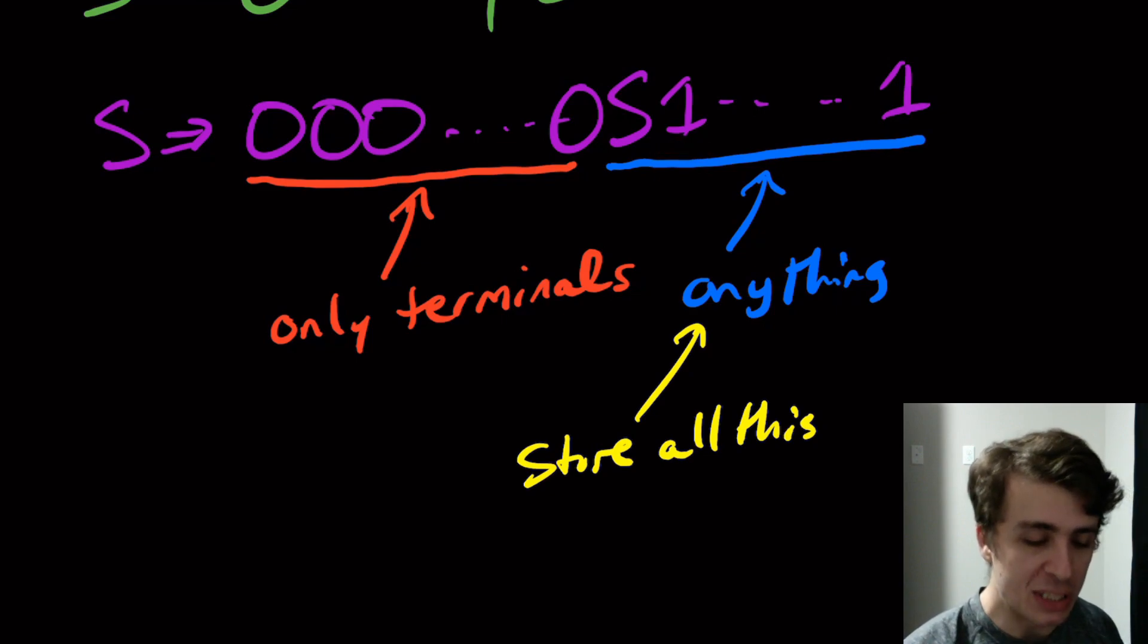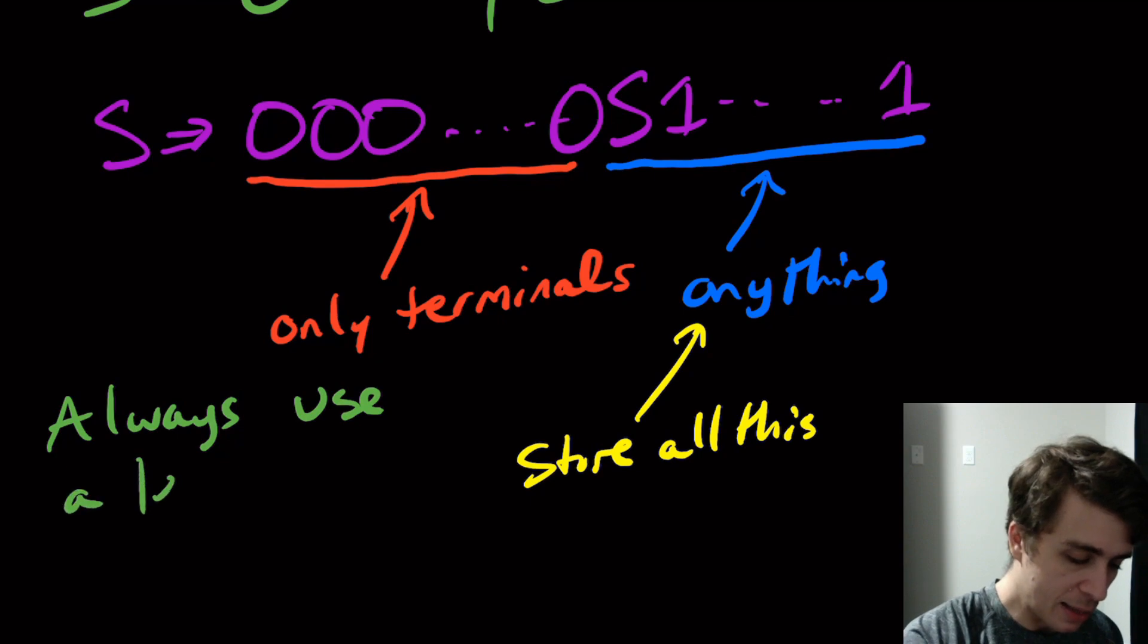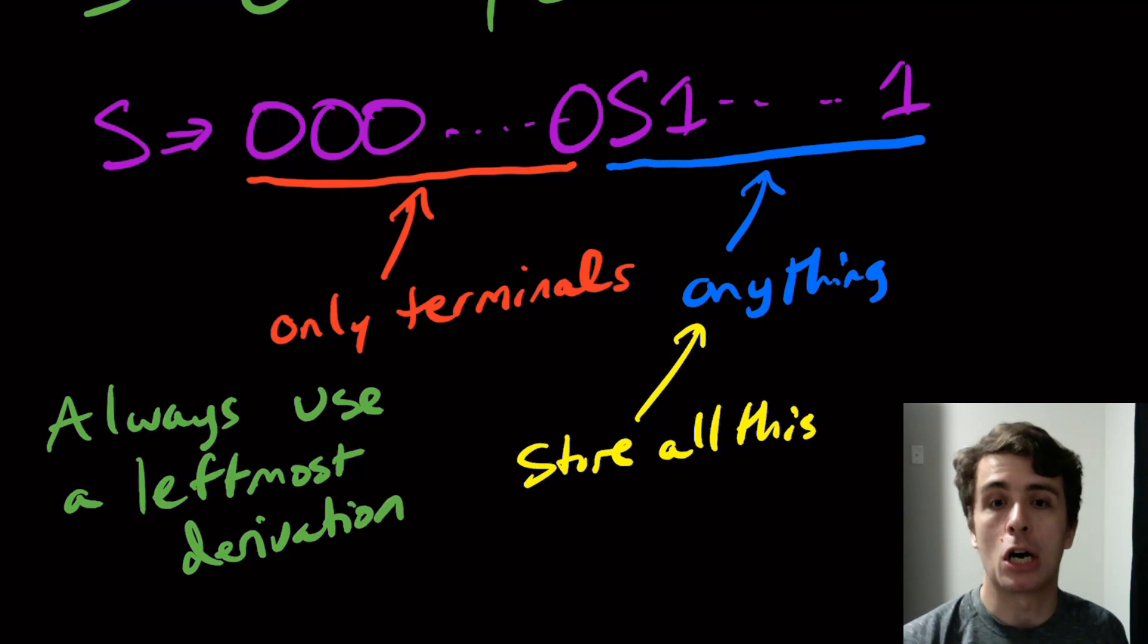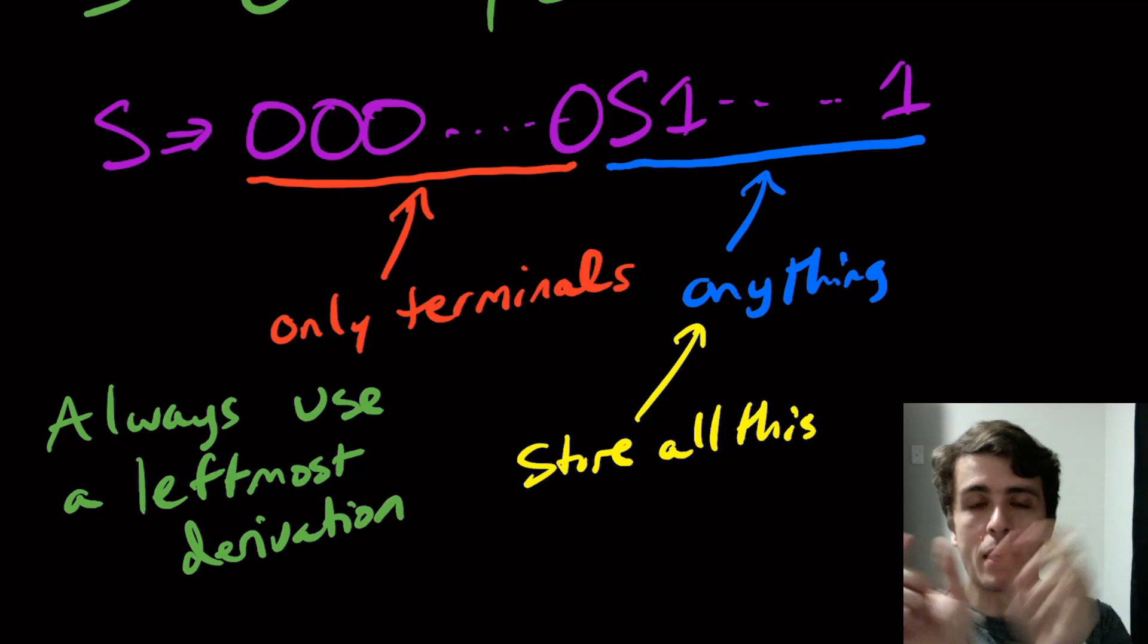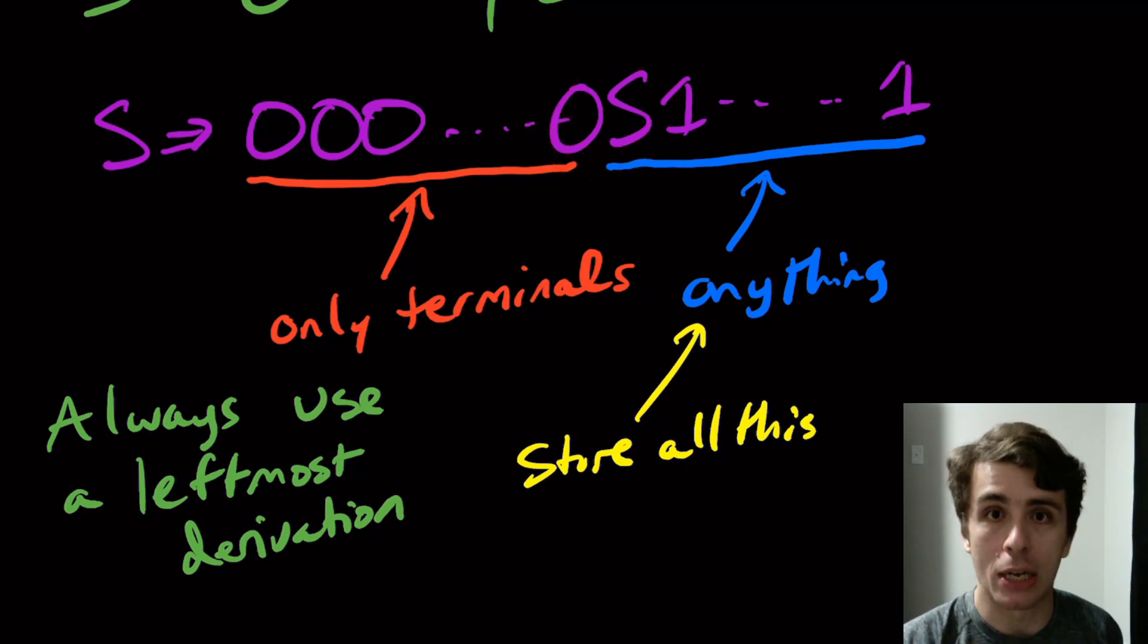Another thing that we should notice is that we can always use a leftmost derivation. Remember, it's a context-free grammar. If we have a bunch of variables that we could apply a rule with, we can always choose the first one, the leftmost one. That indicates here, because the string is being read from left to right and we can always use the leftmost variable without changing the language of the grammar, this tells us we need some kind of structure where we can access stuff on one side. And that is the motivation for using a stack.